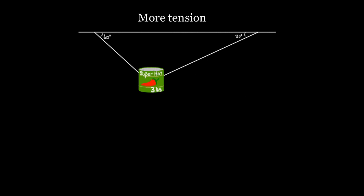You bought a huge canister, an aluminum can, of super hot red peppers, three kilograms worth, and you hung them from two strings from the ceiling because you don't want anyone to get your super hot red peppers. You wanted to know what's the tension in both of these strings. If this is the angle that the strings make with the ceiling, what are these two tensions? This problem's hard — this problem's spicy. This is a spicy tension problem. Let's start with something a little more mild and work our way up to this.